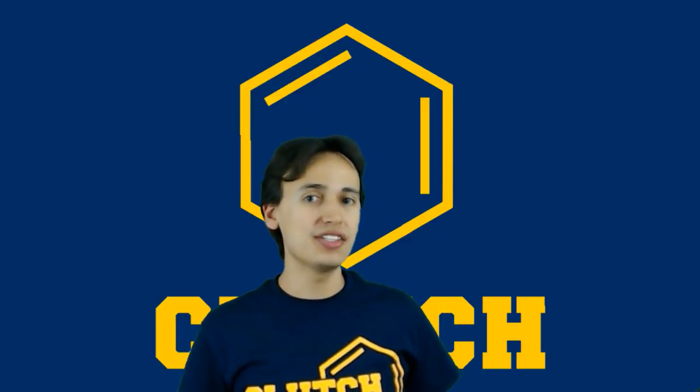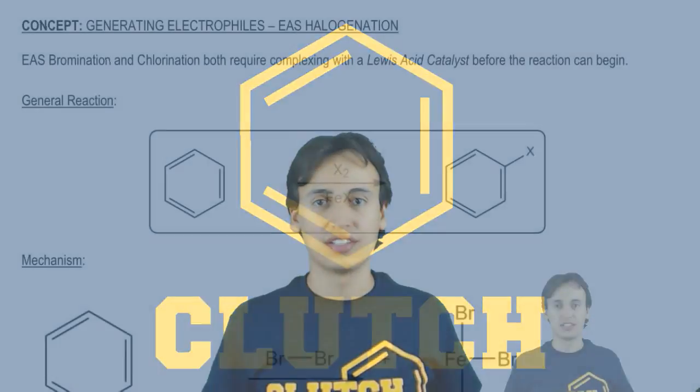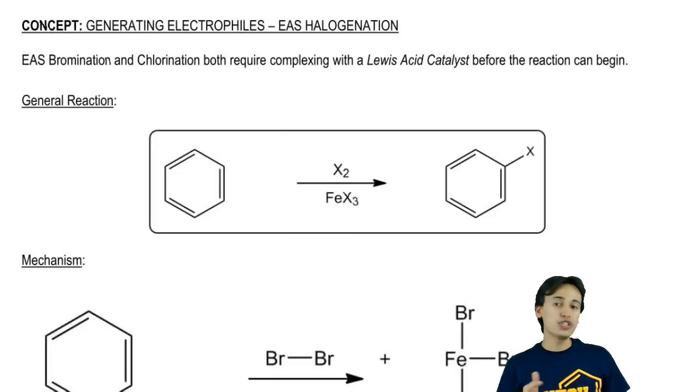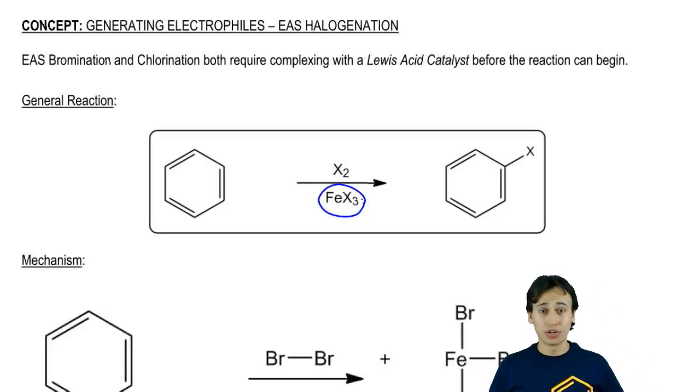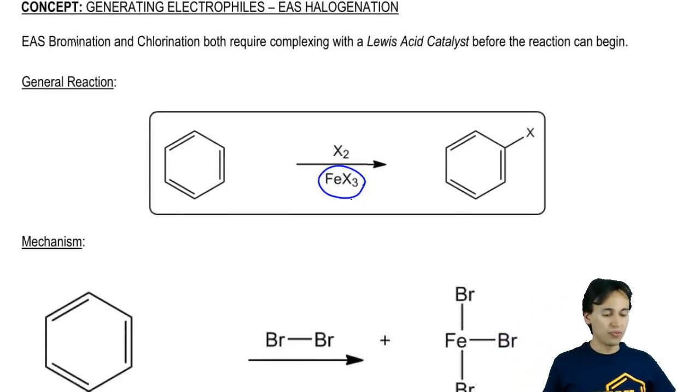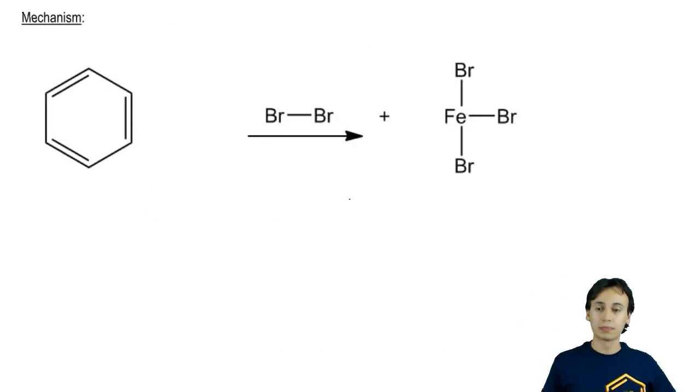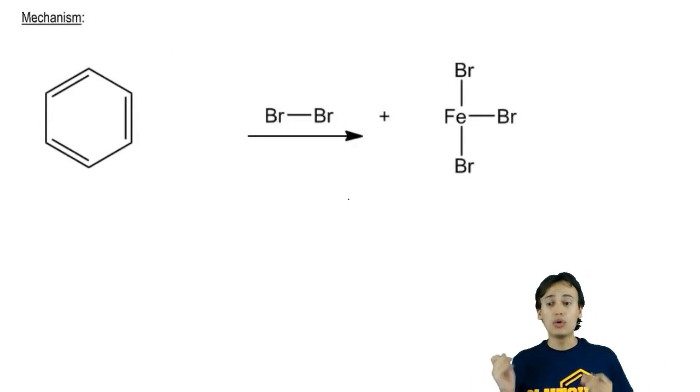Let's dive into the exact mechanism of EAS halogenation. EAS bromination and chlorination both have to complex with a Lewis acid catalyst before any reaction can take place. Remember that in our general reaction, you need that Lewis acid catalyst in order to go anywhere. In our very first step, before the benzene can get involved at all, we need to complex our diatomic halogen with the Lewis acid catalyst.